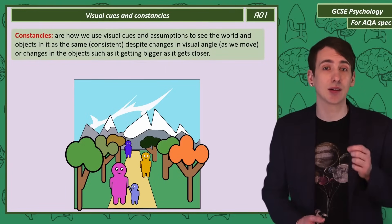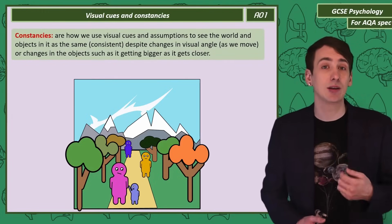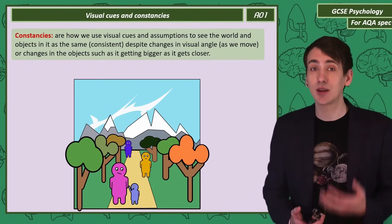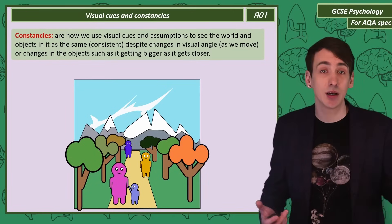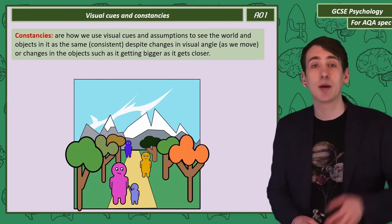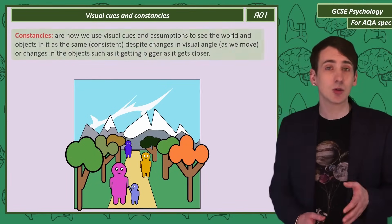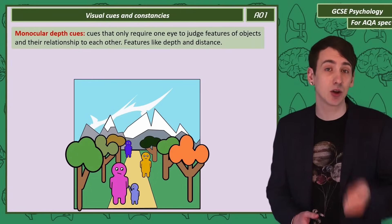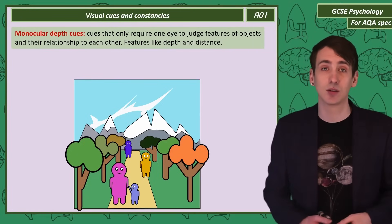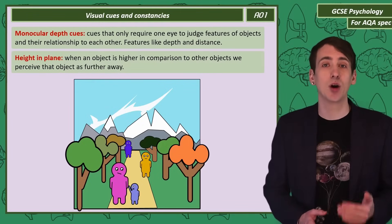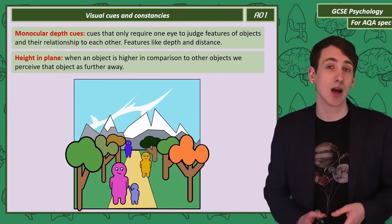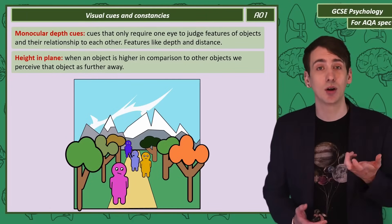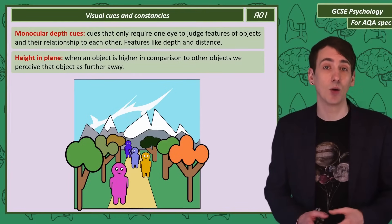Constancies are the way the brain sees objects as the same despite changes in perspective and size. So imagine you're walking up to and around a building — you see it as the same building even though it gets bigger and looks different from each side. Some cues are called monocular, meaning we only need one eye to judge and assume features like depth or distance. Let's start with height in a plane: when an object is higher up compared to other objects, we assume it's further away. If I move the light blue person up, your perspective may change, seeing them as further away.